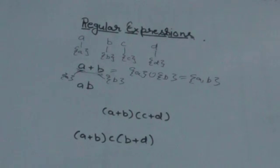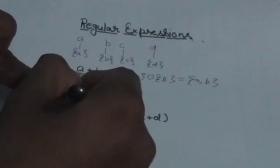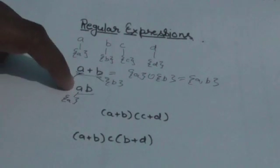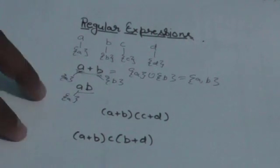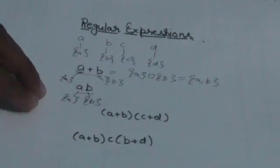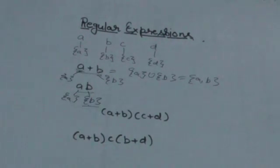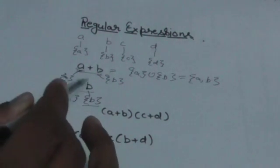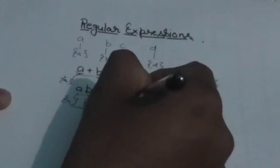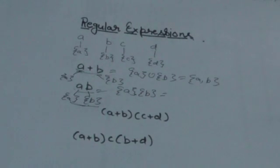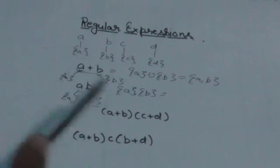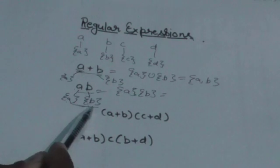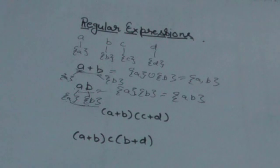Now look at the second expression ab. The regular set corresponding to the regular expression a is the set having only one element, a. Similarly for regular expression b. The regular set corresponding to ab would be the concatenation of these two sets — that is, the set whose strings are formed by concatenating the strings of each set. So only one string will be formed: ab.